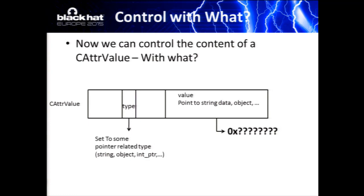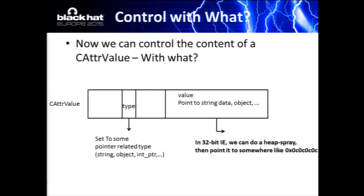The next question is: what data should we fill into this CAttribute value? Our plan is to set the VT type to a pointer type such as string or object, so we need to set the value field to point to a valid memory address. If we were exploiting 32-bit Internet Explorer it would be simple, because we could spray a lot of memory blocks and let the pointer point into the sprayed memory. But in 64-bit IE, this kind of heap spray will not work as we said before.